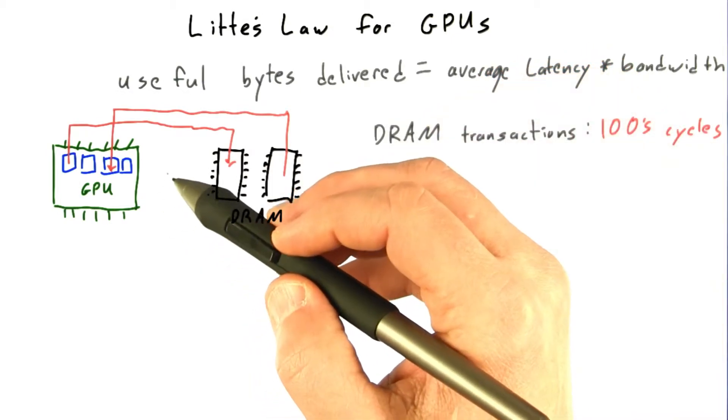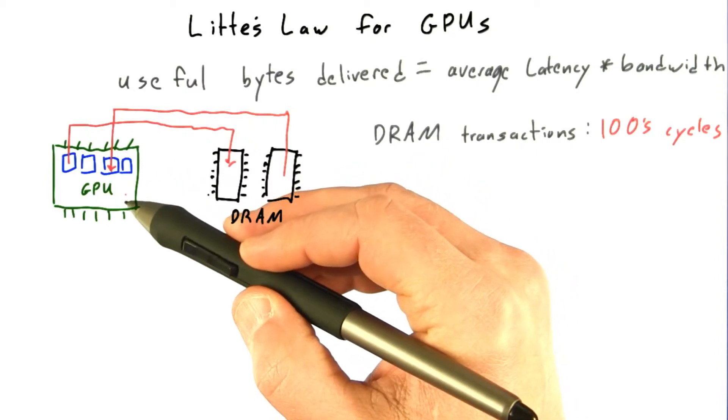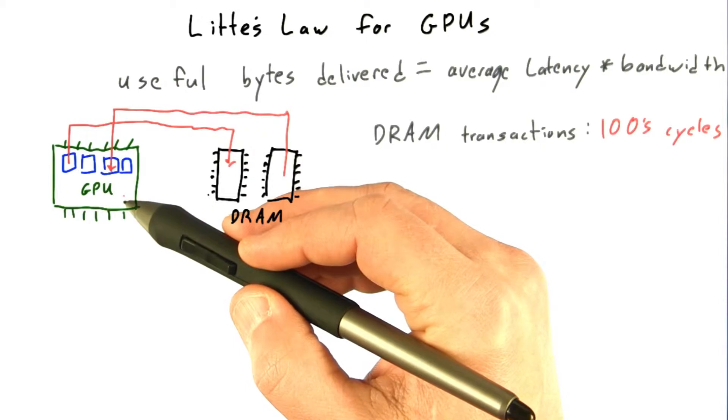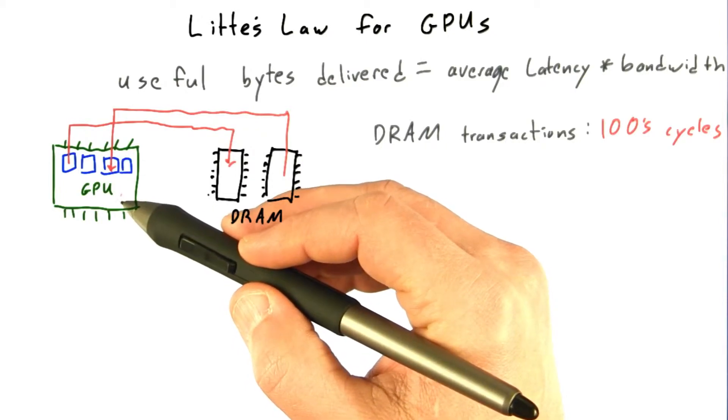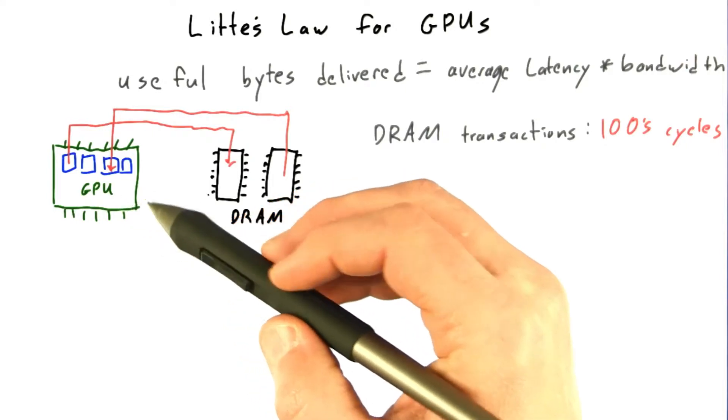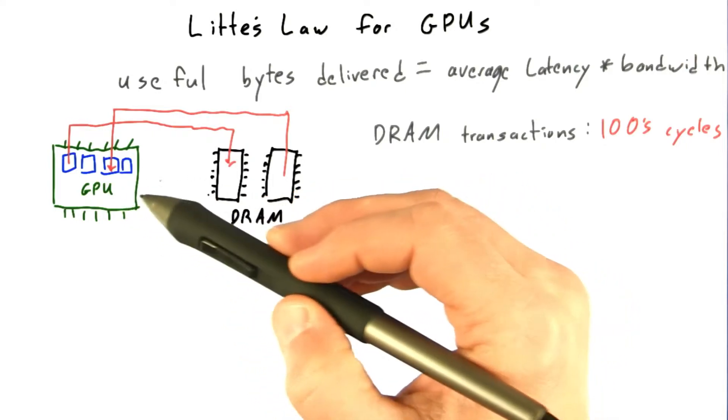And by the way, this isn't a GPU thing. This is true of all modern processors. A clock cycle on a modern chip takes half a nanosecond, for example, on a 2 GHz chip, and even the speed of light, light doesn't go very far in half a nanosecond, and electricity is even slower, especially on the tiny wires that you find in computer chips.